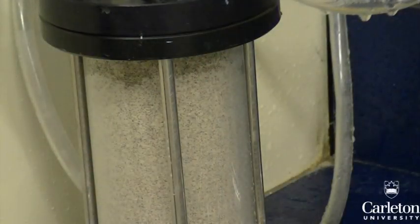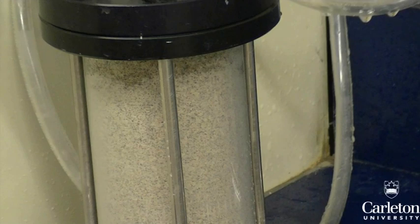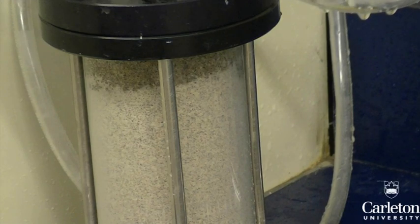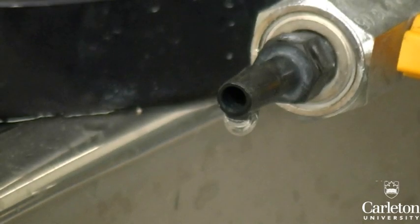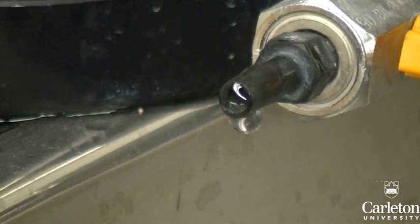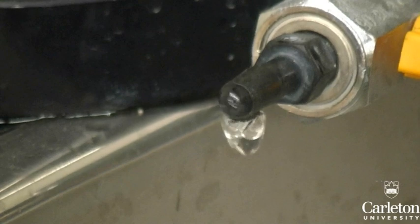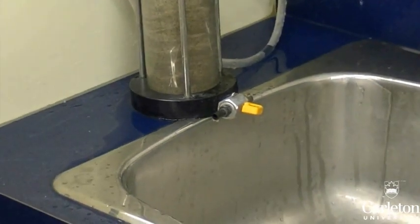As you can see here, water will start moving into the test cylinder and saturating the sample. When water starts coming out of the nozzle at the bottom, we can proceed. If there are bubbles in the pipe, gradually add more water to the system so that the air can be flushed out.